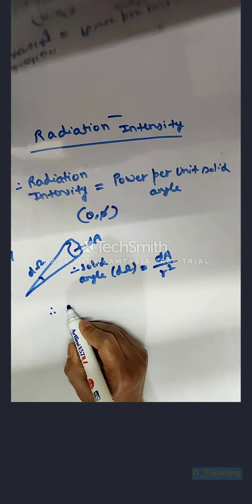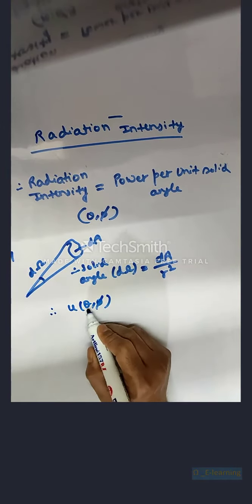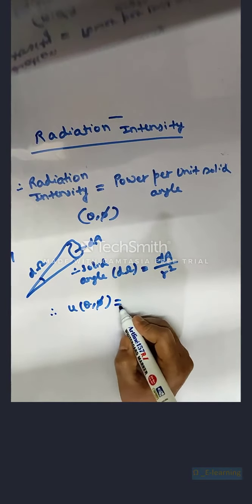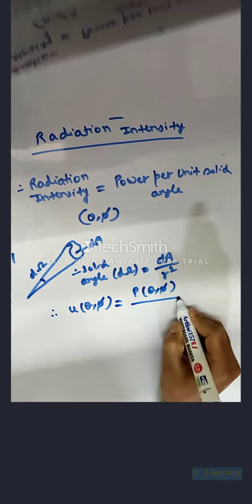So radiation intensity u theta phi is equal to p theta phi by d omega.